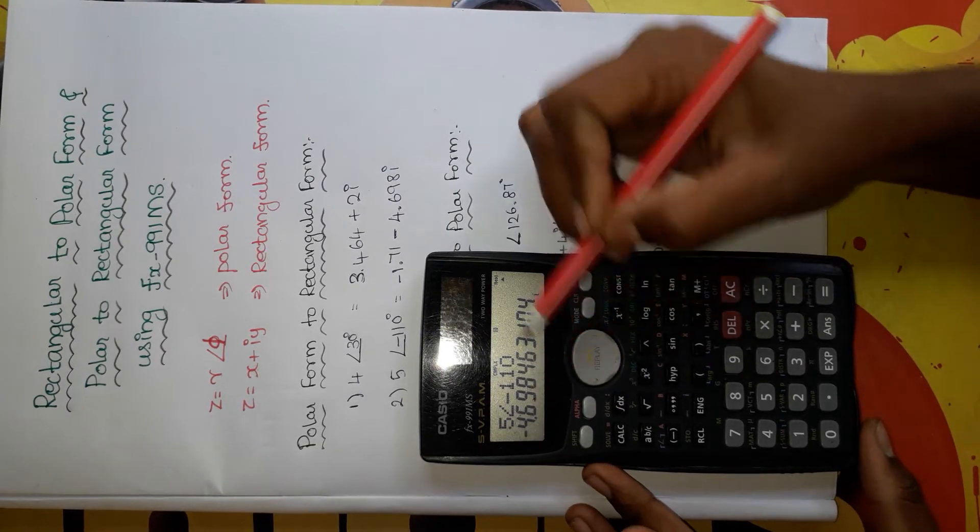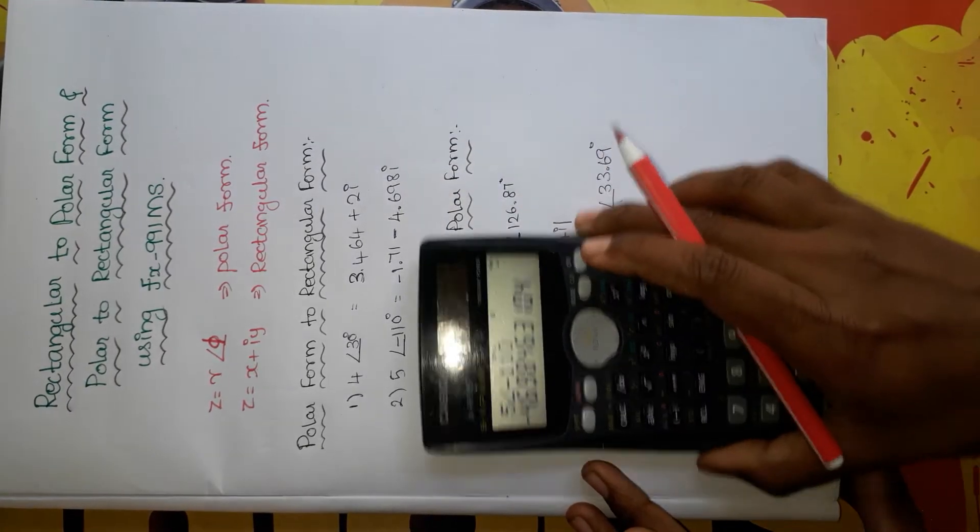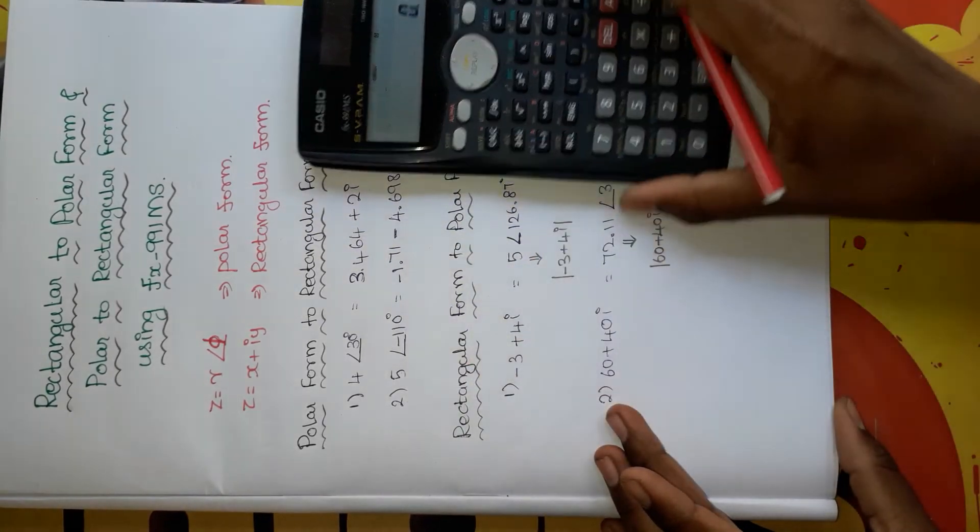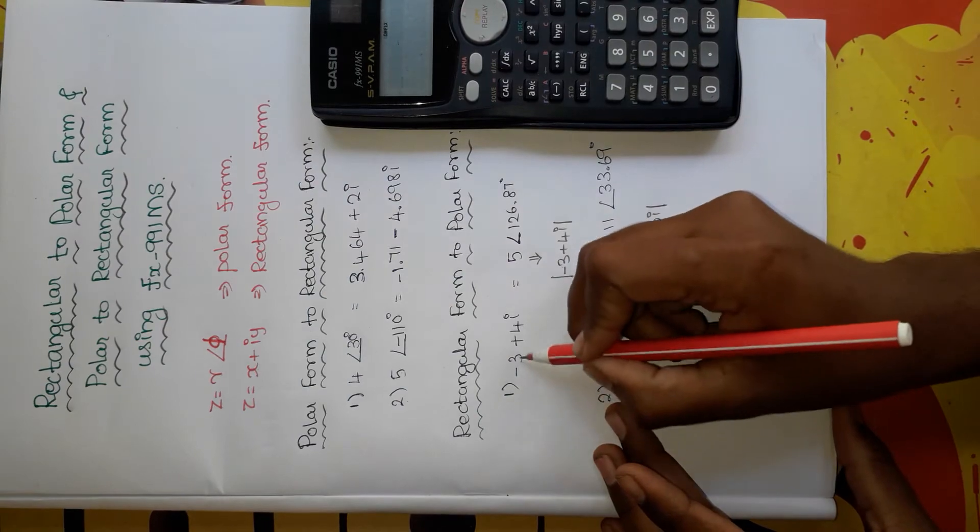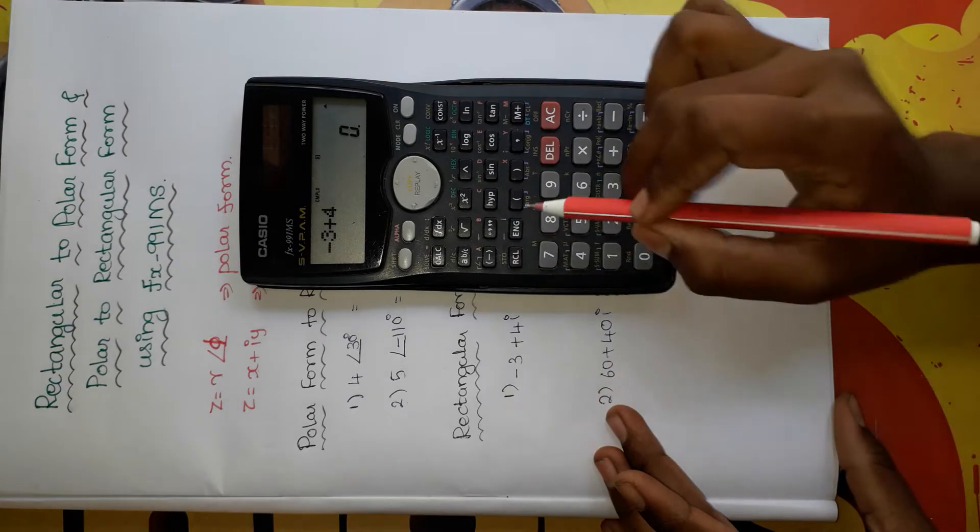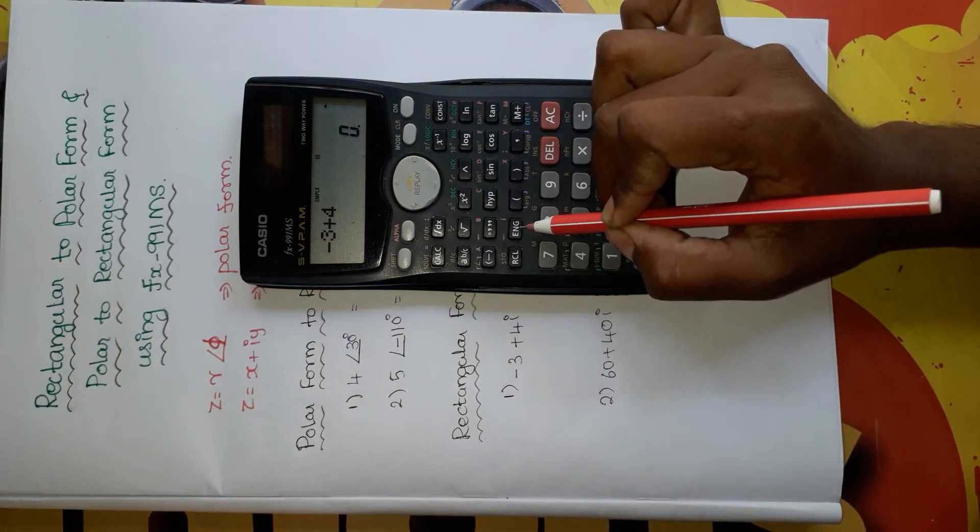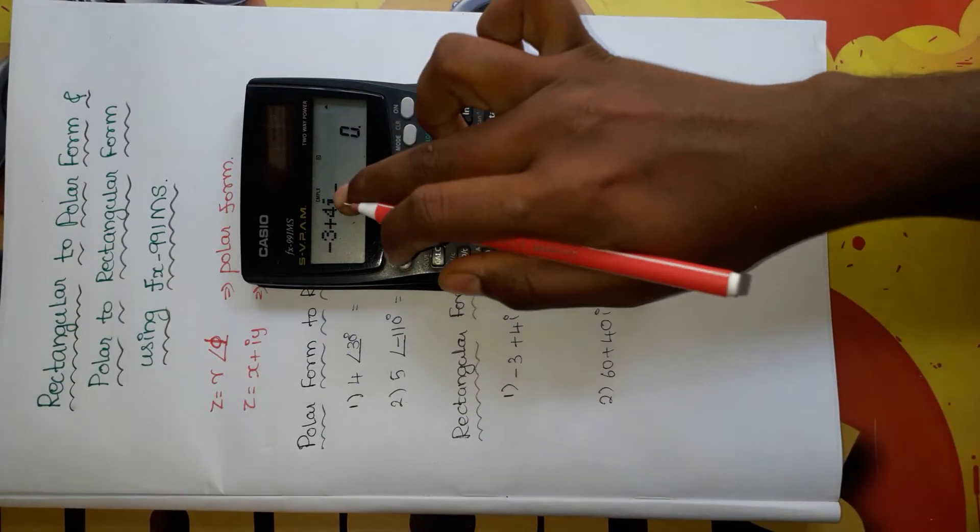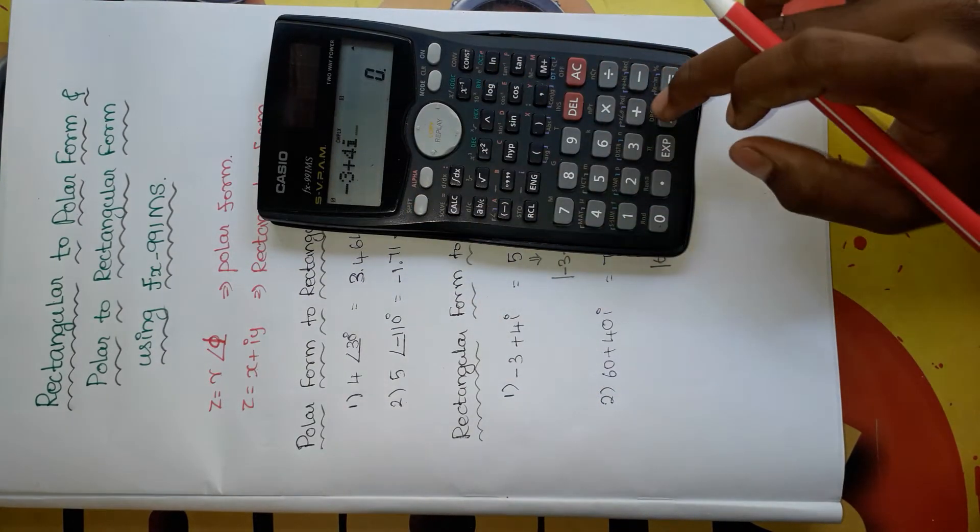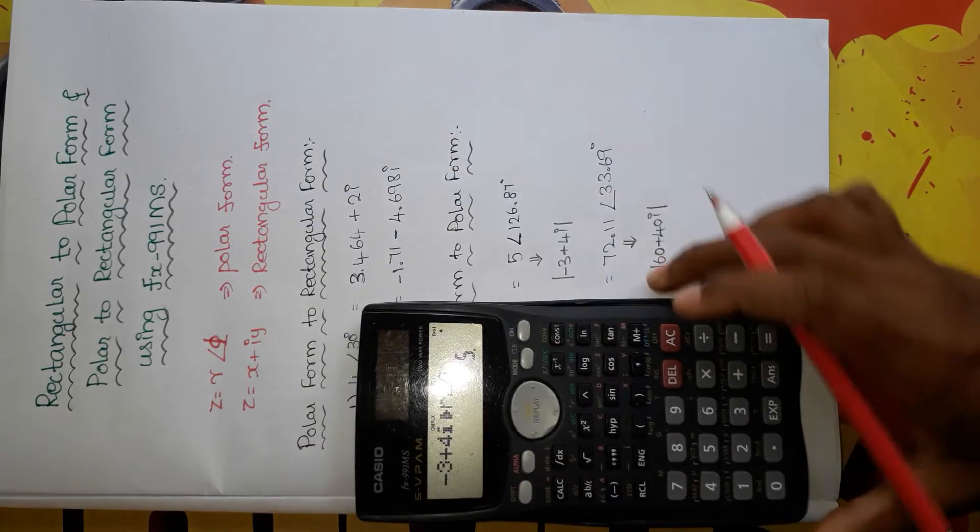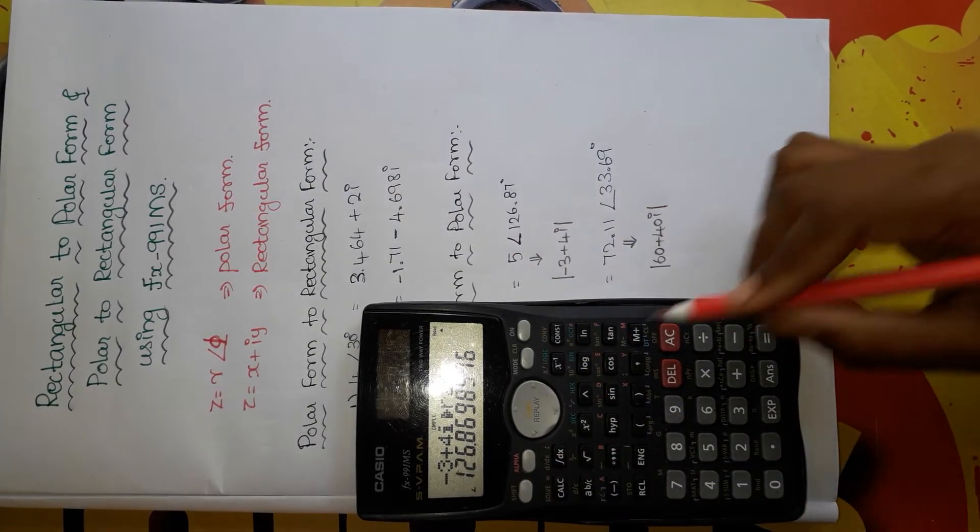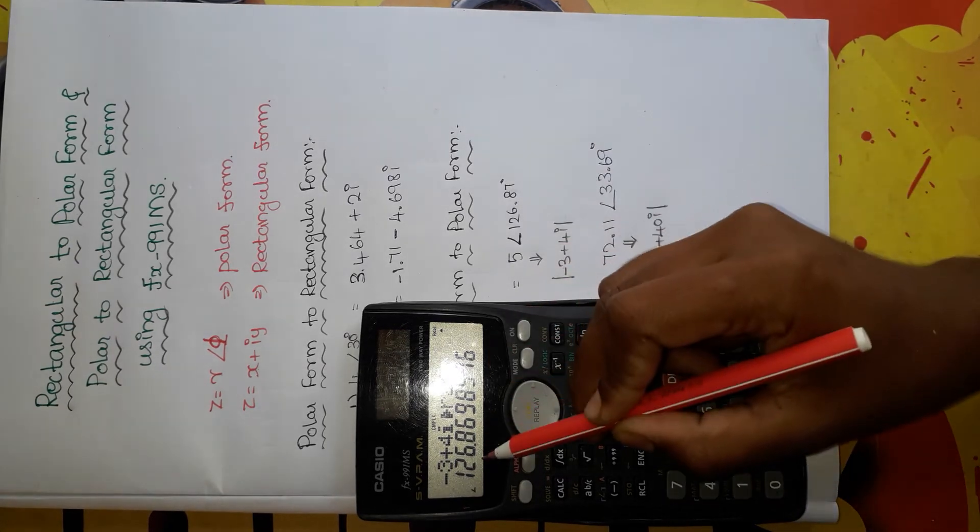Now we will convert rectangular form to polar form. I take minus 3 plus 4i. So press minus 3 plus 4, and for the i symbol you have to press ENG. Now it shows the i symbol. So now press shift and then the plus symbol, then press equal to. You will get the magnitude. Then press shift and then equal to, you will get the angle part, 126.869.